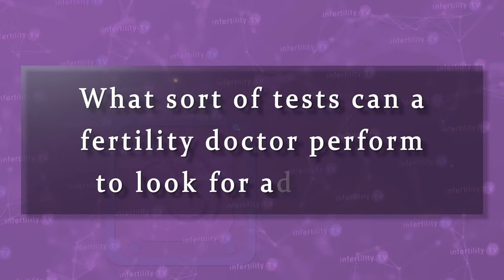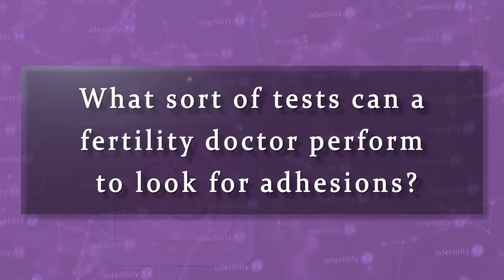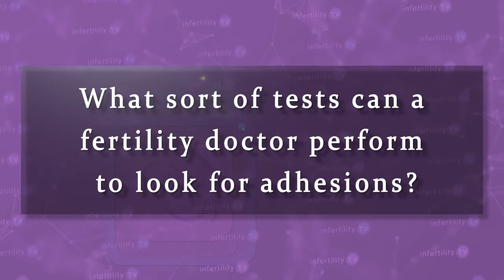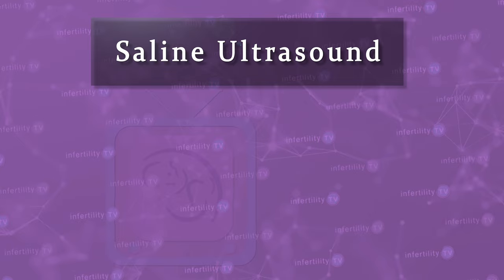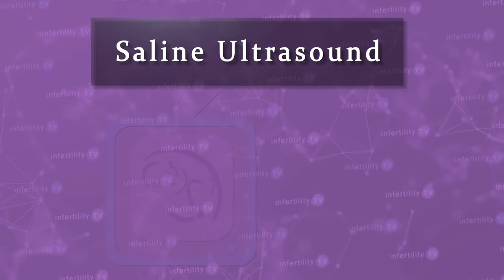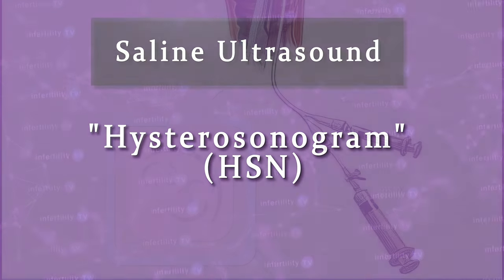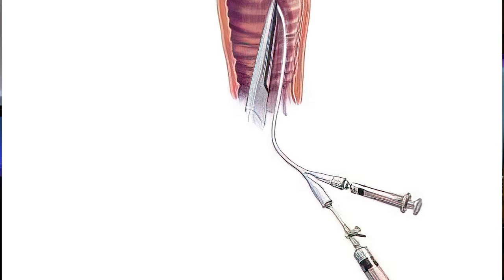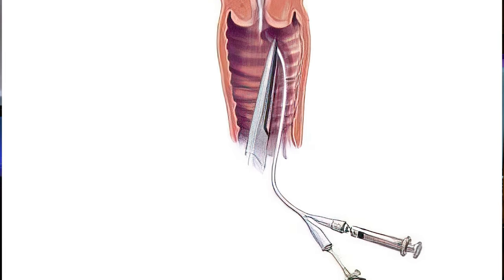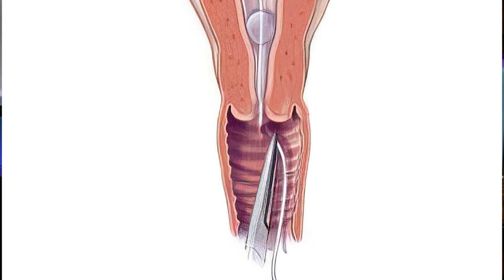In some cases, changes in your bleeding can be due to other causes, like failure to ovulate. Menstrual bleeding, therefore, is not a perfect method for assessing for intrauterine adhesions. What sort of tests can a fertility doctor perform to look for adhesions? There are three. The first test is called a saline ultrasound or hysterosonogram. During this test, a catheter is inserted into the uterus and salt water is squirted inside.